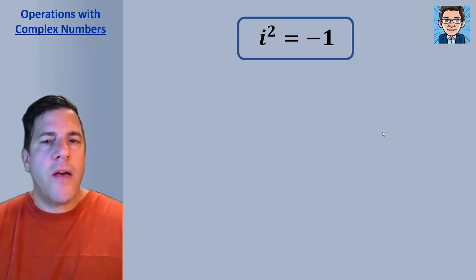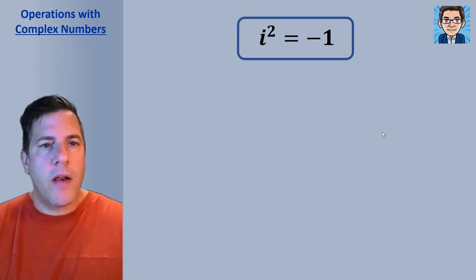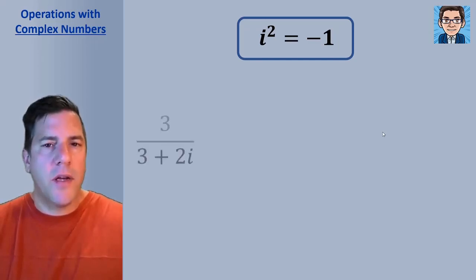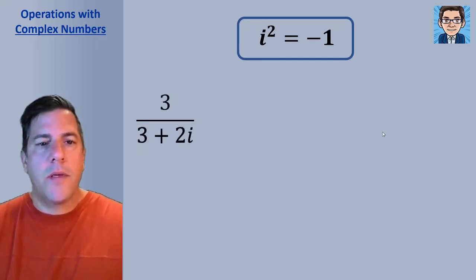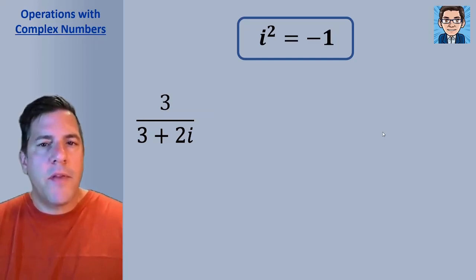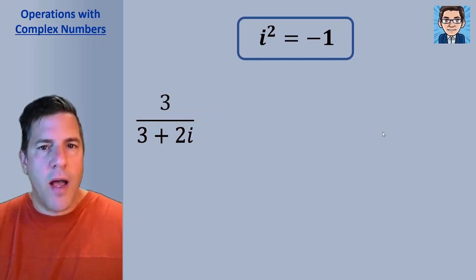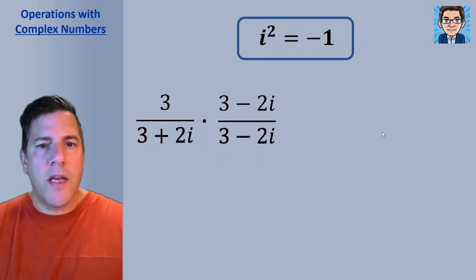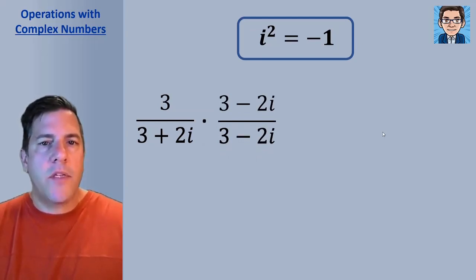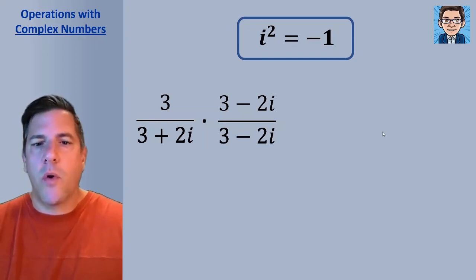If we have a complex number in the denominator, we multiply by its conjugate. The conjugate of 3 plus 2i is 3 minus 2i — the same two terms but with a different sign. This is chosen because it will cancel out the imaginary number in the denominator, as we'll see.